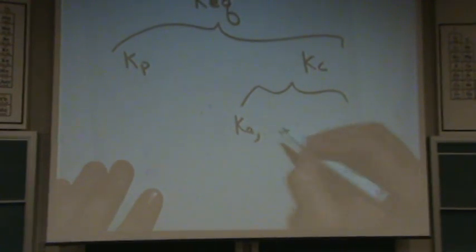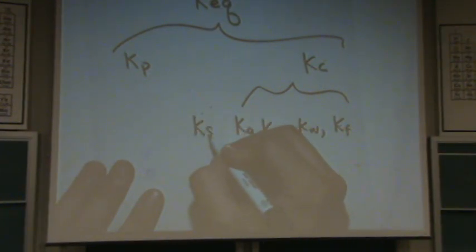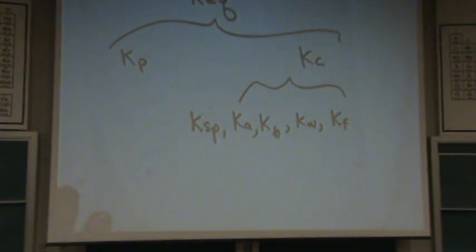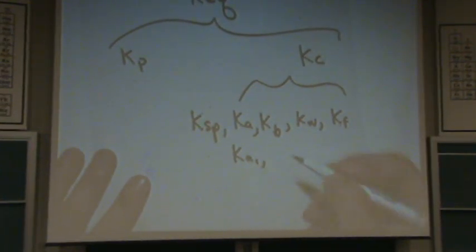Under KC, you have KA, KB, KW, what else? KF, KSP. I think that's all of them. And then all of the polyprotic, so like KA1, KA2, et cetera, for polyprotic.